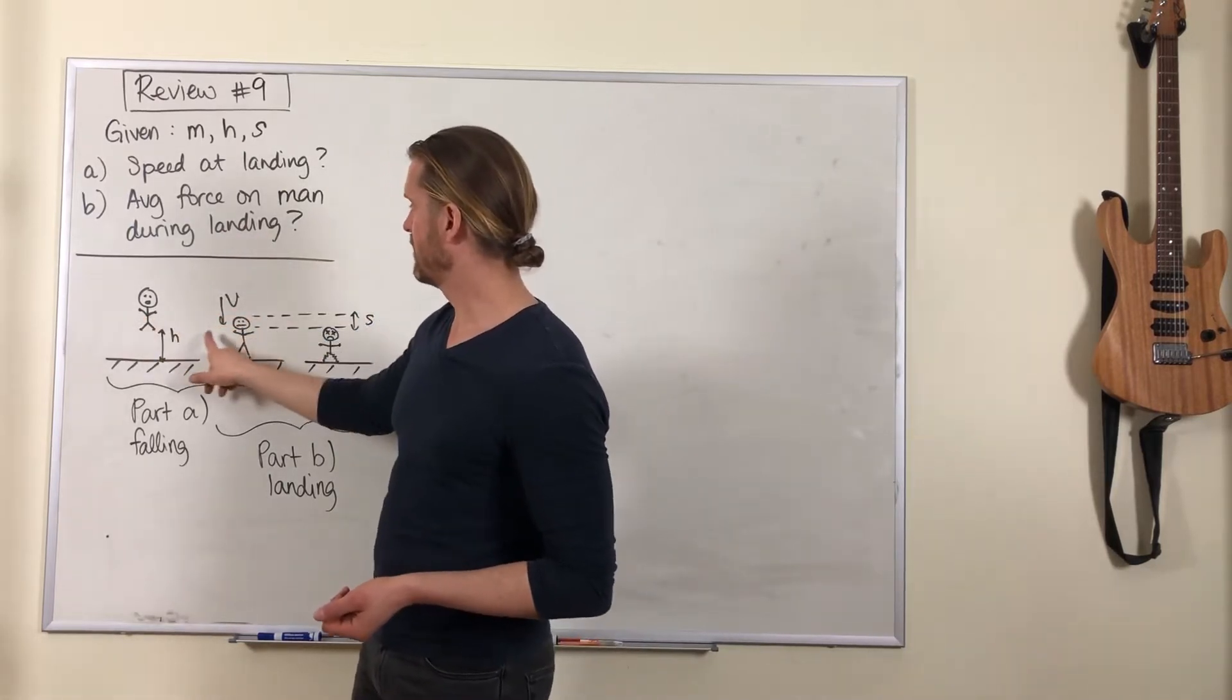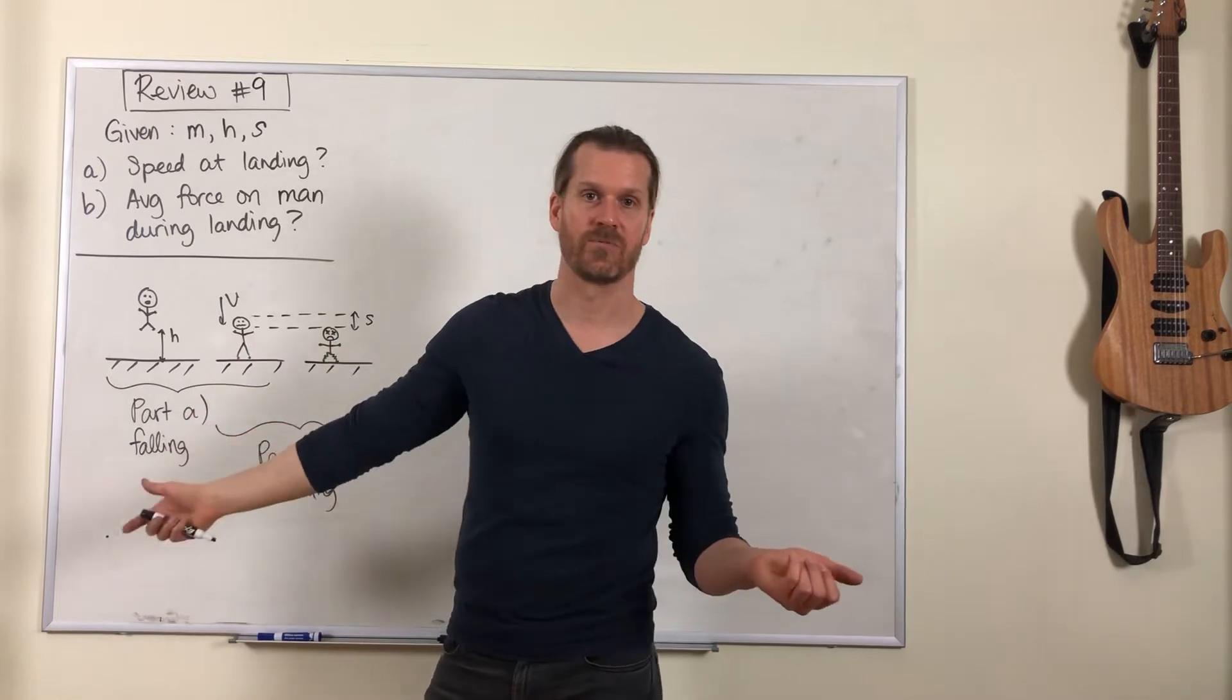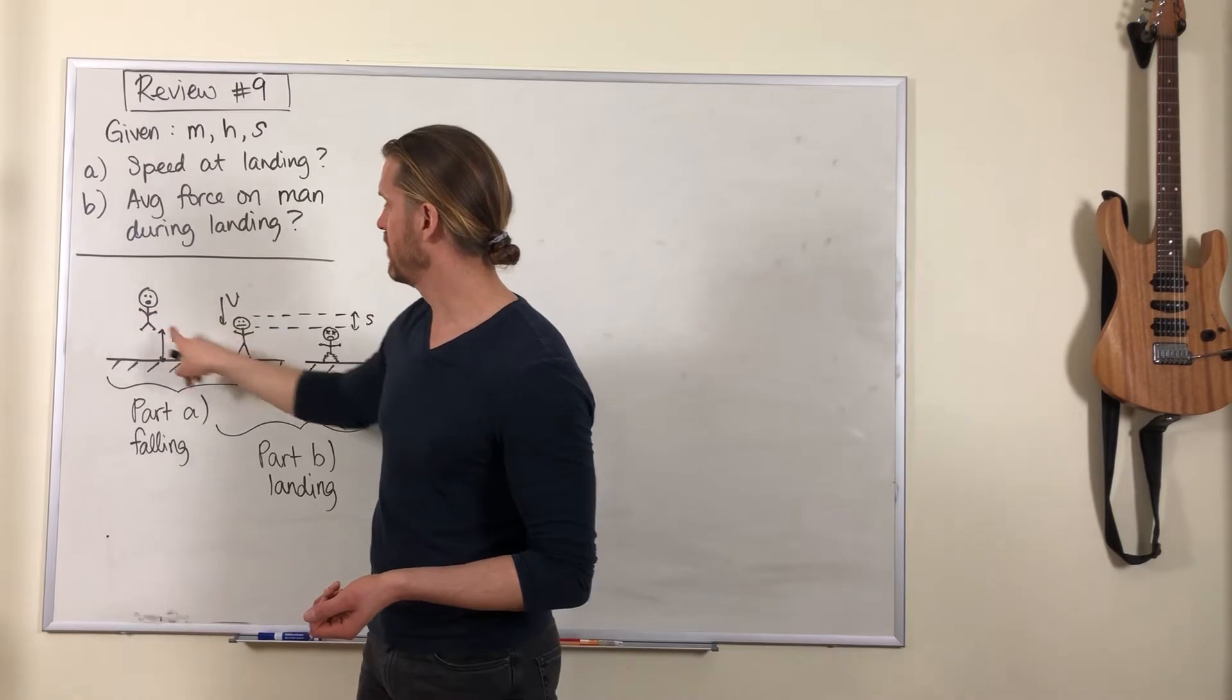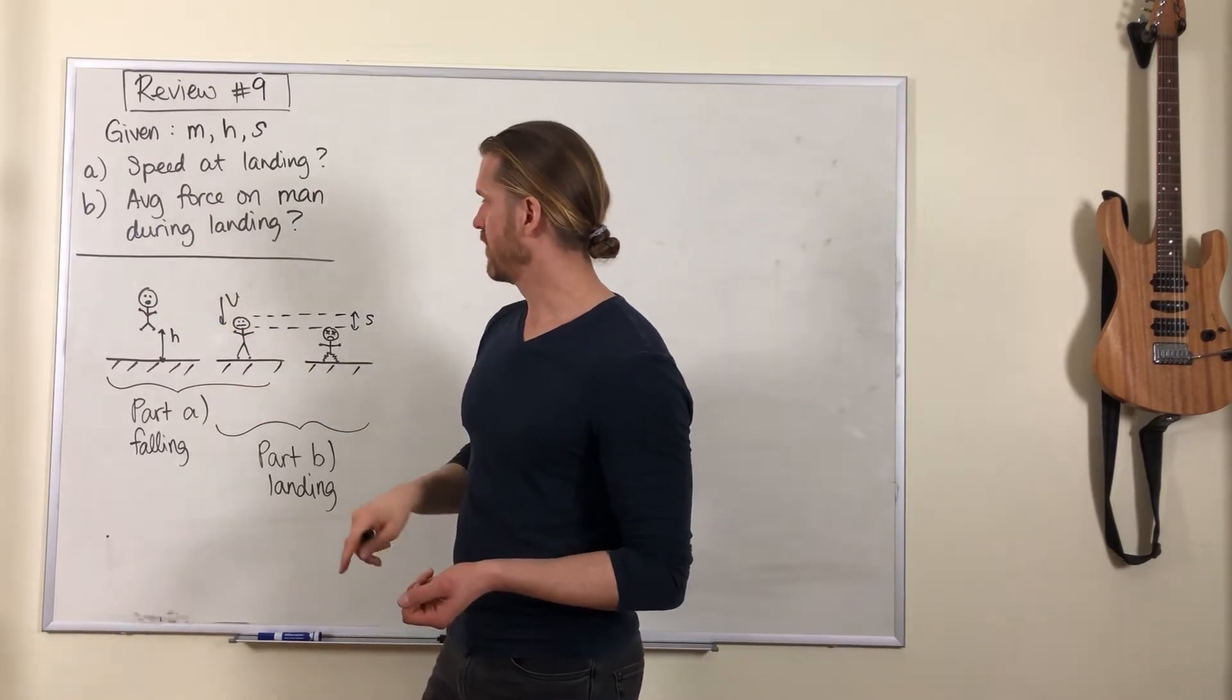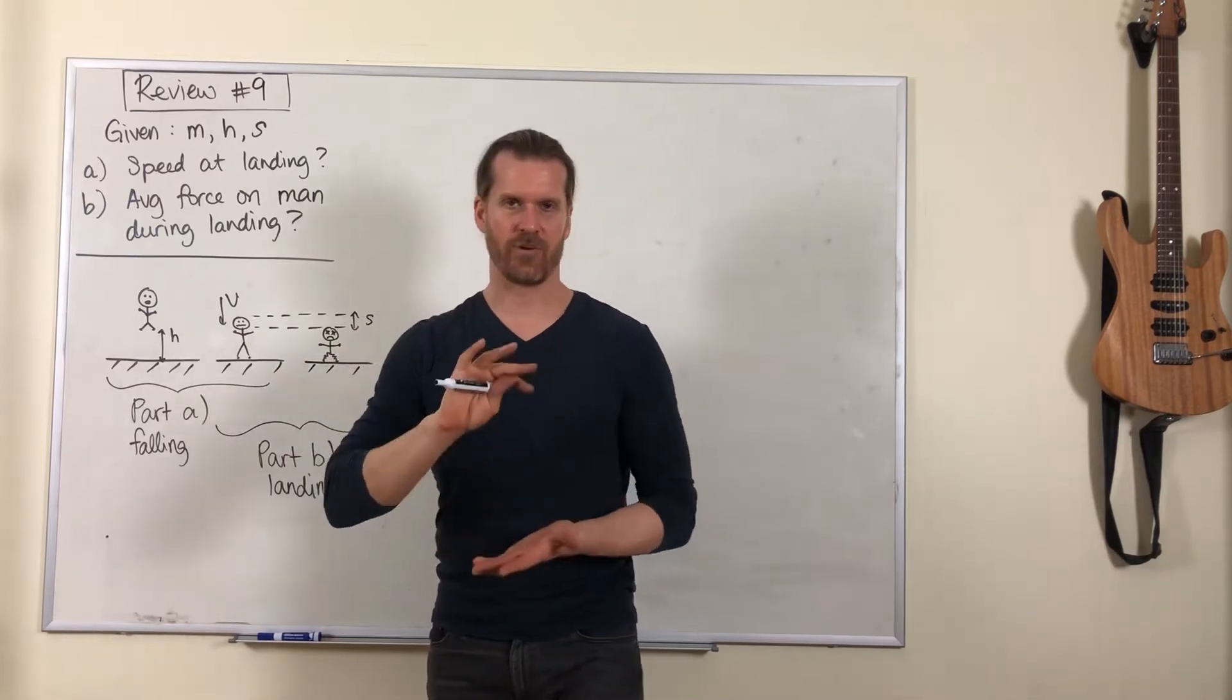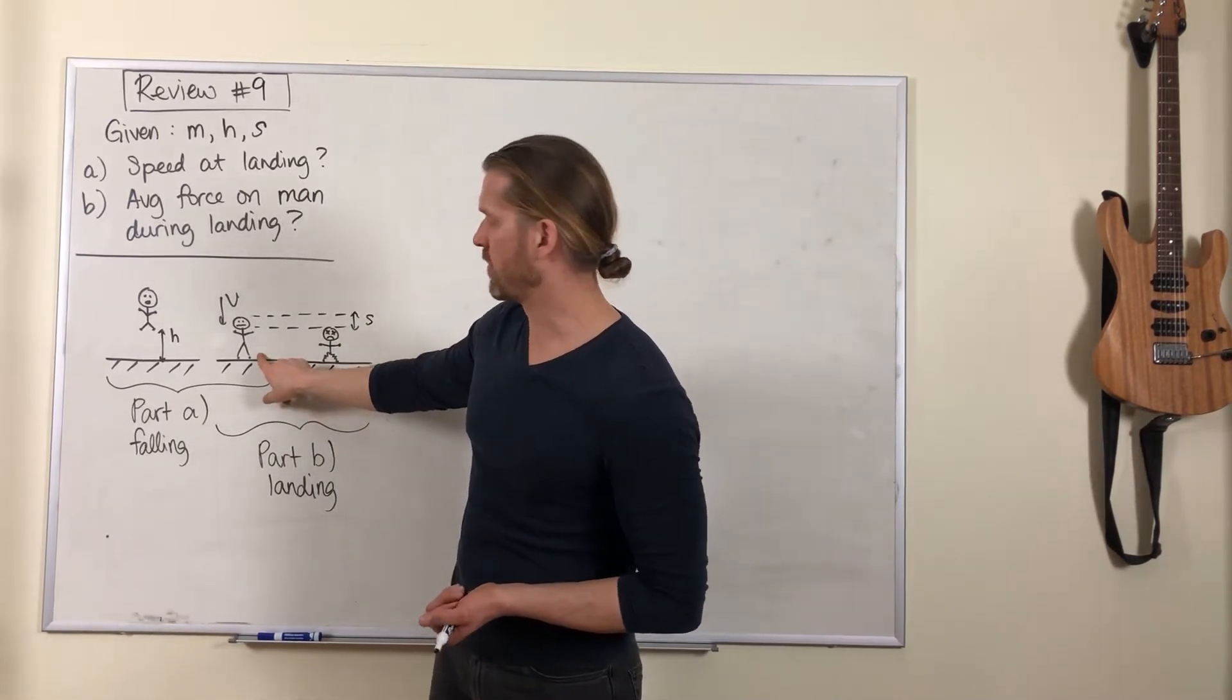Part a of the problem: we're going to figure out how fast he's moving when he hits the ground. That's a simple conservation of energy calculation. He jumps from the window and lands on the ground.